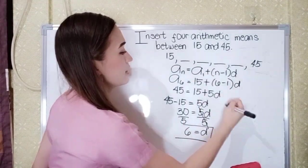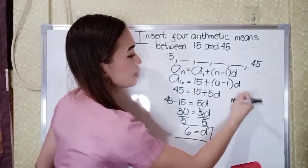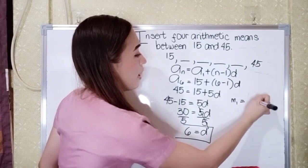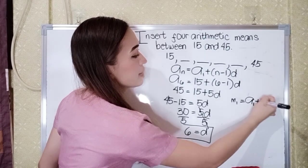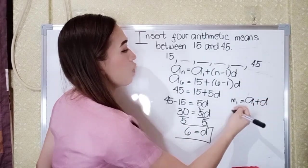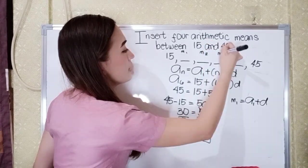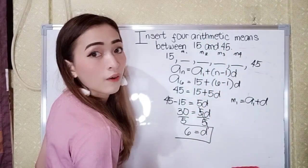So that will become, so this is our mean sub 1. So our mean sub 1 is equal to A sub 1 plus the distance. So this will be our mean sub 1, mean sub 2, mean sub 3, and then mean sub 4.